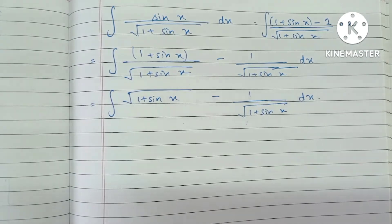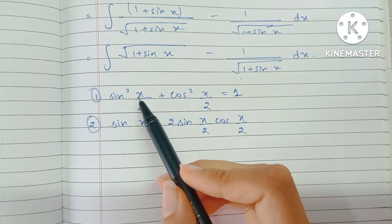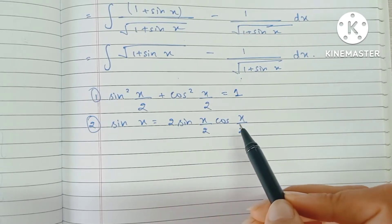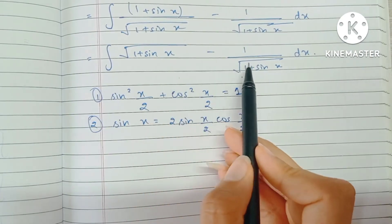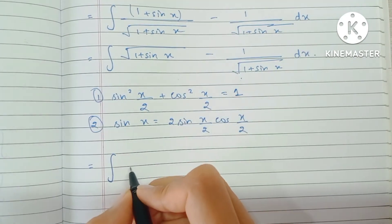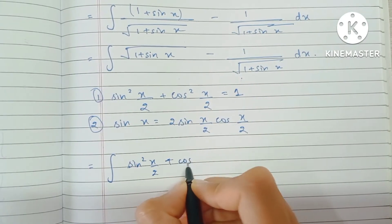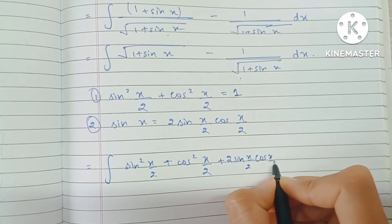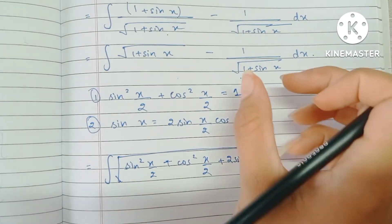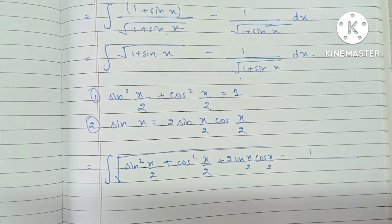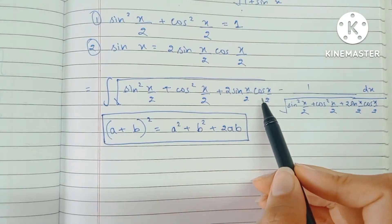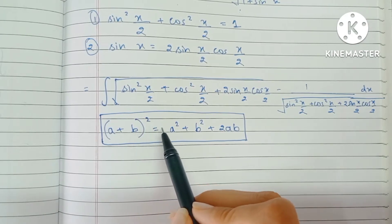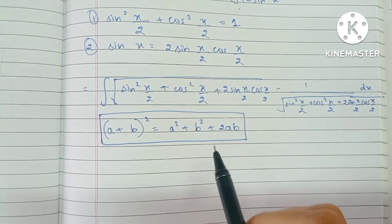Now we use two trigonometric half-angle identities: sin²(x/2) + cos²(x/2) = 1, and sin x = 2 sin(x/2) cos(x/2). In the first term, we replace 1 with sin²(x/2) + cos²(x/2), and sin x with 2 sin(x/2) cos(x/2) under the root. We recognize this expression as the perfect square of (sin(x/2) + cos(x/2)), by the expansion of (a + b)² = a² + b² + 2ab.